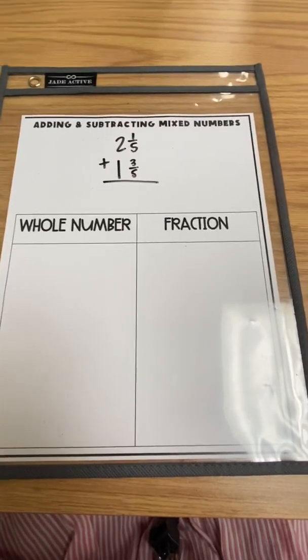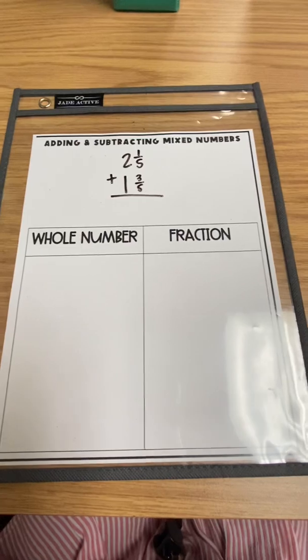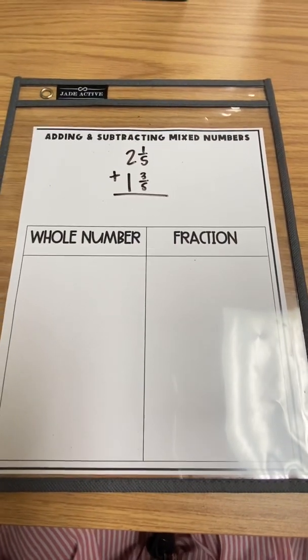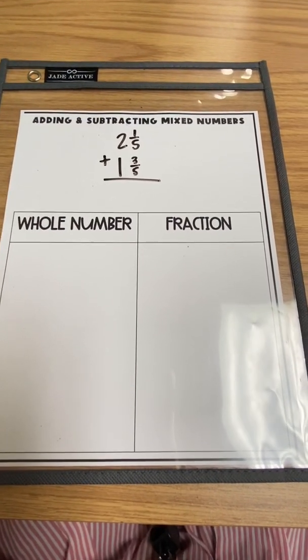So let's say that we have 2 and 1 5th plus 1 and 3 5ths. So they would build a whole with 5 5ths and we talked about that in the last video that students need to know that the denominator tells them how many pieces are in the whole.